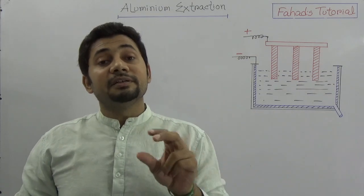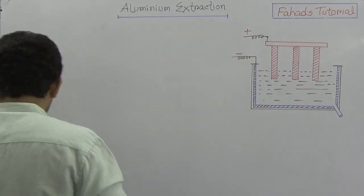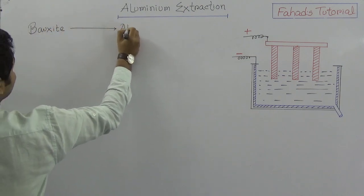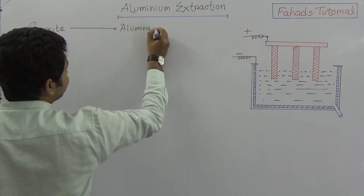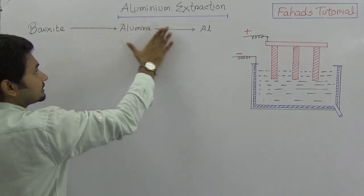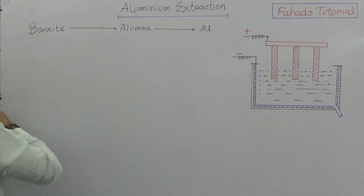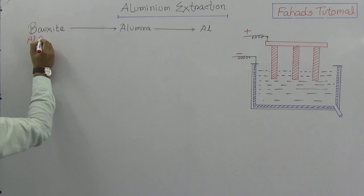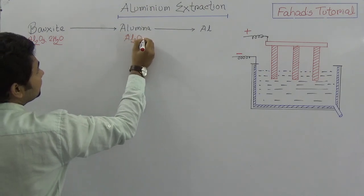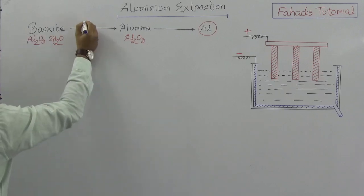Aluminium is extracted from the mineral bauxite, and there are two important processes. First, we convert bauxite into alumina, and then from alumina we extract aluminium. Bauxite is chemically Al₂O₃·2H₂O. The first of these processes is the Bayer's process, which is very important.